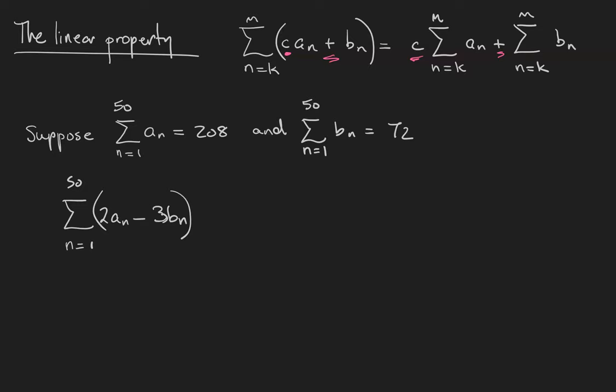As an example, suppose that we know that the value of the sum from 1 to 50 of the a_n's is 208, and we know that the value of the sum from 1 to 50 of the b_n's is 72. Then what is the sum from 1 to 50 of the sequence 2a_n minus 3b_n?